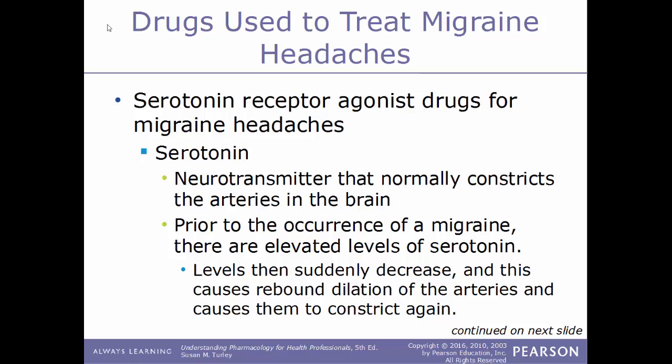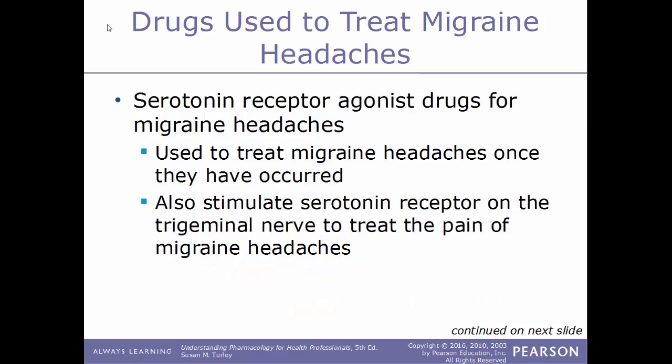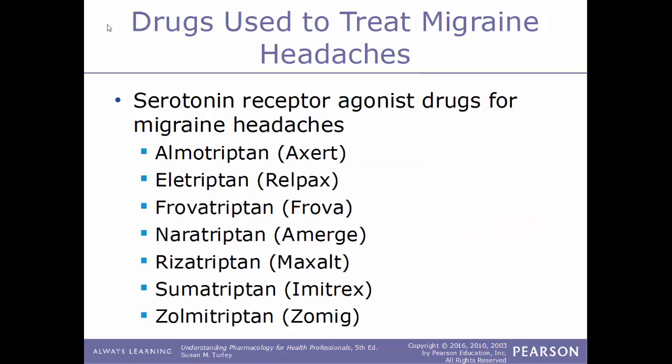The first type of drug used to treat migraines are serotonin receptor agonist drugs. Serotonin is a neurotransmitter that normally constricts the arteries in the brain. Prior to a migraine, there are elevated levels of serotonin; these levels suddenly decrease, causing a rebound dilation of the arteries. This type of drug is used to treat migraine headaches once they have already occurred, and they also stimulate serotonin receptors on the trigeminal nerve. These drugs are collectively known as triptan drugs. Examples include: almotriptan sold under Axert; eletriptan sold under Relpax; frovatriptan known as Frova; naratriptan known as Amerge; rizatriptan sold under Maxalt; sumatriptan known as Imitrex; and zolmitriptan sold under Zomig.